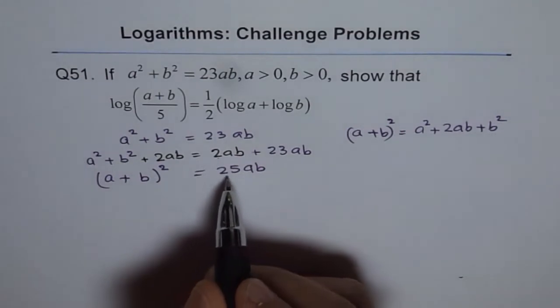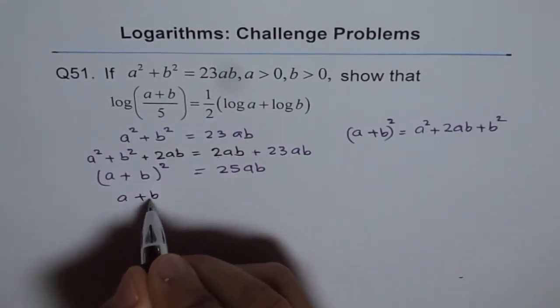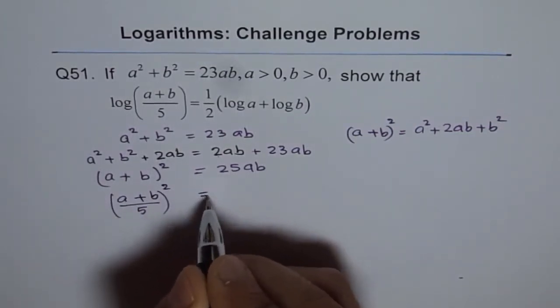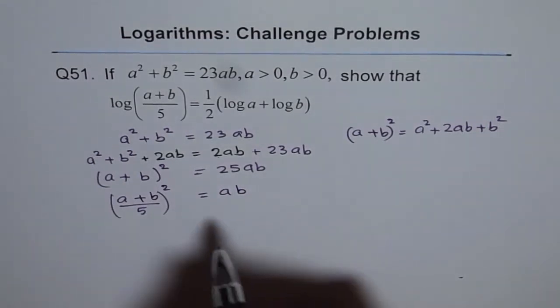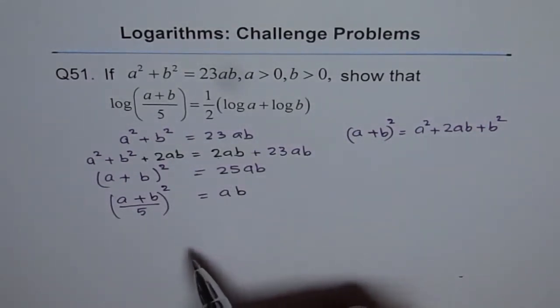Now, we can rewrite this. 25 is 5 square, right? So we can write this as a plus b over 5 whole square, because 5 square is 25, equals ab. What we did is we divided by 5 square on both sides, and we got this.